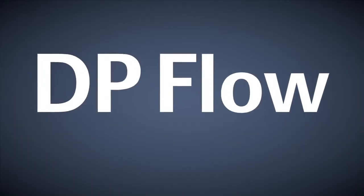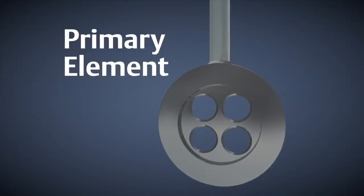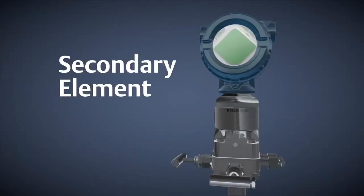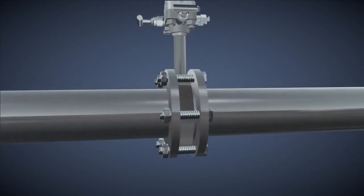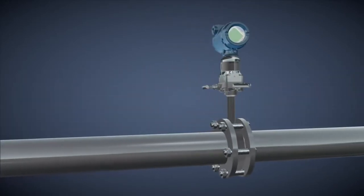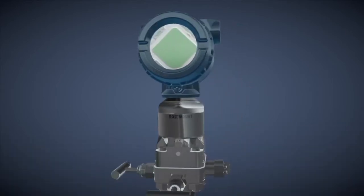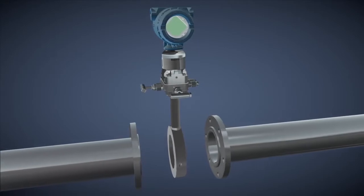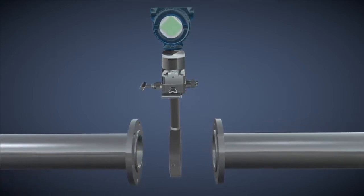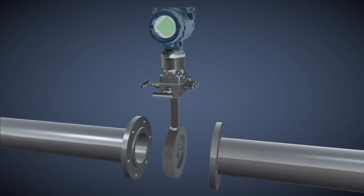DP flow is measured with a combination of a primary element and a secondary element. A primary element is placed in the pipe to create a differential pressure while connecting the secondary element to the process. The secondary element or transmitter takes measurements from the primary element and converts them into useful quantitative values and transmits those values to a control system.